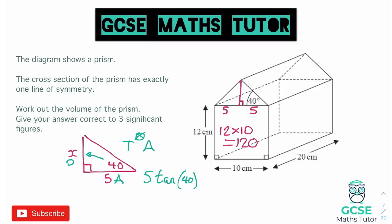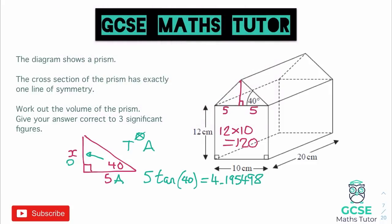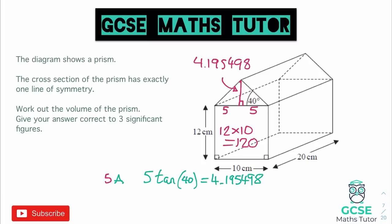There are a few more decimals. It says to give the answer to three significant figures, so I'm going to record it to a few more decimal places for accuracy. With a calculator question like this, we want to make sure we put down enough decimals. So the height is 4.1954981 — that's seven significant figures, which is definitely enough to keep this as accurate as possible. So there is the height of the triangle: 4.195498.